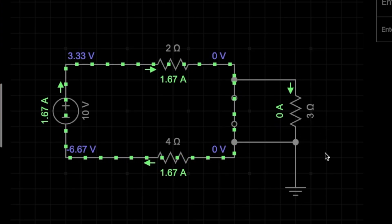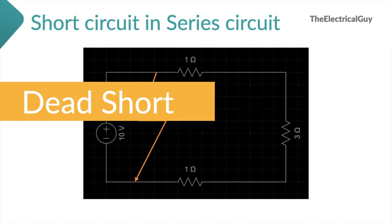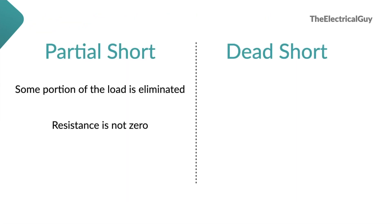There is another type of short called a dead short. Consider the same series circuit with a short that has eliminated all components or load from the circuit, meaning the resistance is zero, which will cause extremely high current. The worst part is if there are no protective devices in the circuit like a fuse or circuit breaker — the situation becomes very dangerous and can cause explosions. In a partial short, only some part of the circuit is eliminated and resistance is not completely zero. However, in a dead short, all load is eliminated, causing the total resistance to become zero, and zero resistance means huge current.